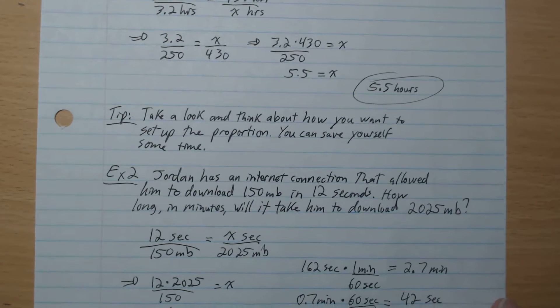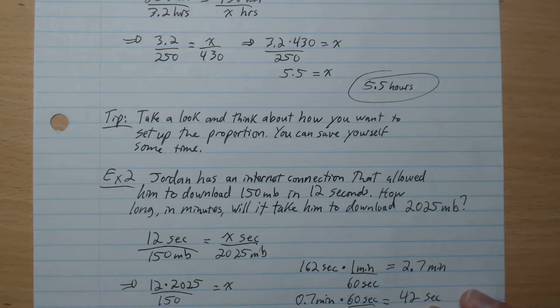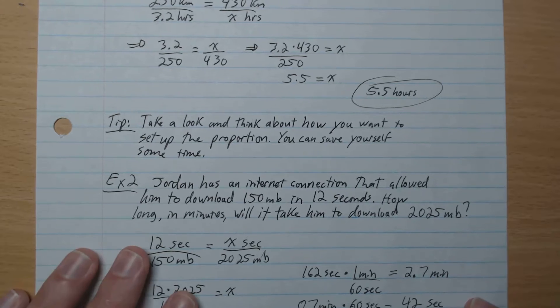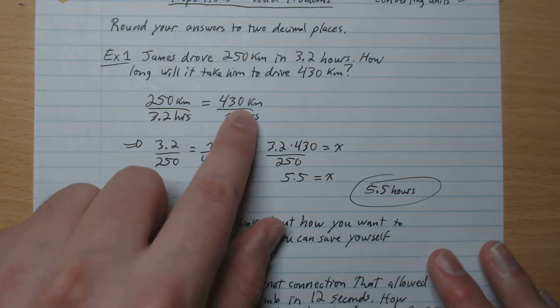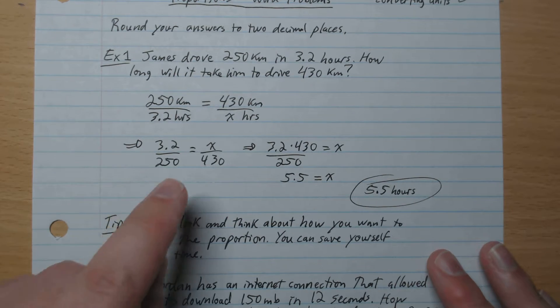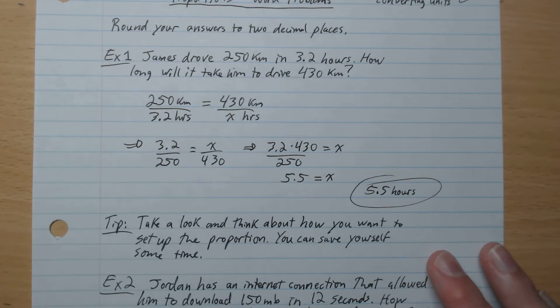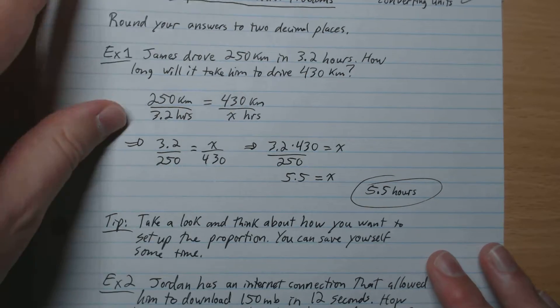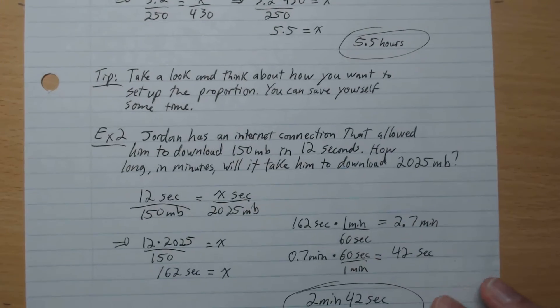Just a little tip: take a look and think about how you want to set up the proportion. You can save yourself some time. If we thought about it ahead of time, we would have written as x over 430 right away. We can do that, and we're going to do that same thing in example two.